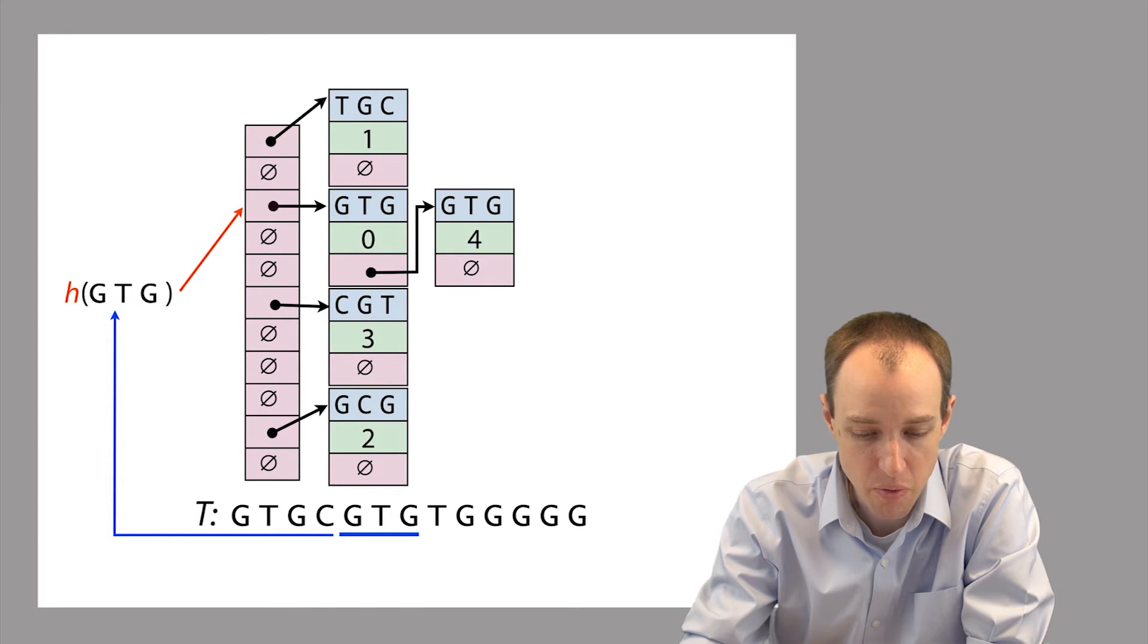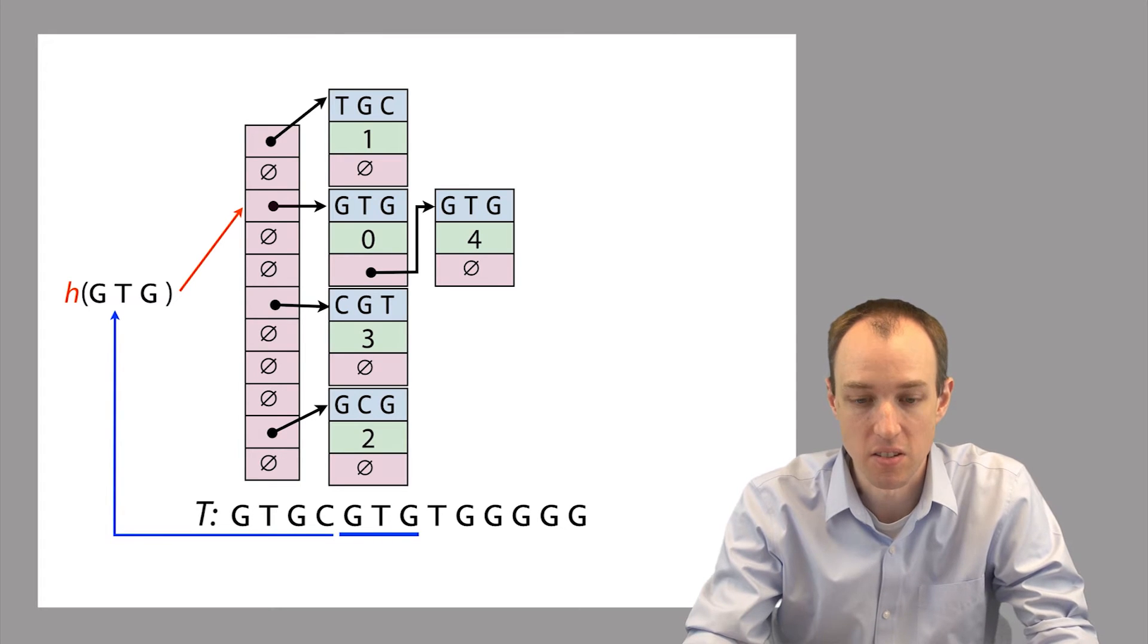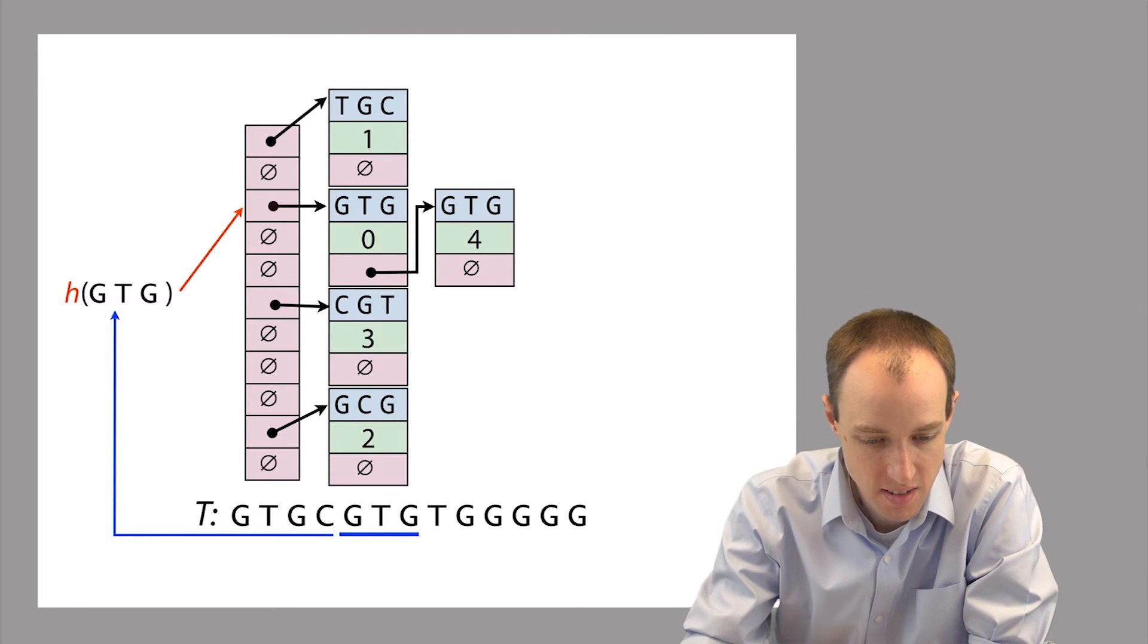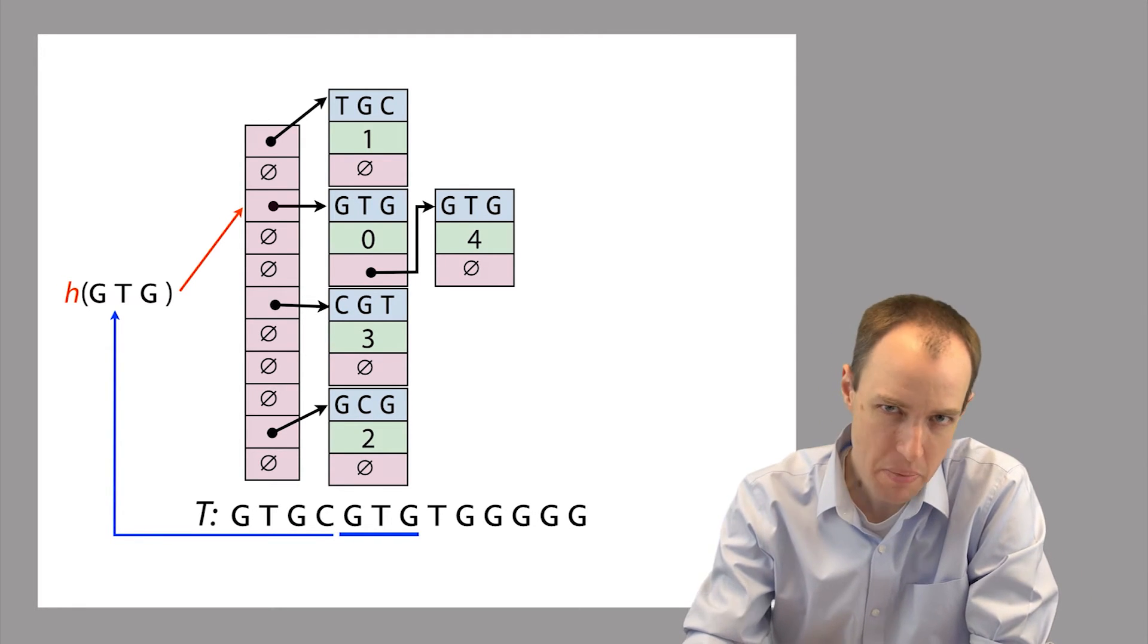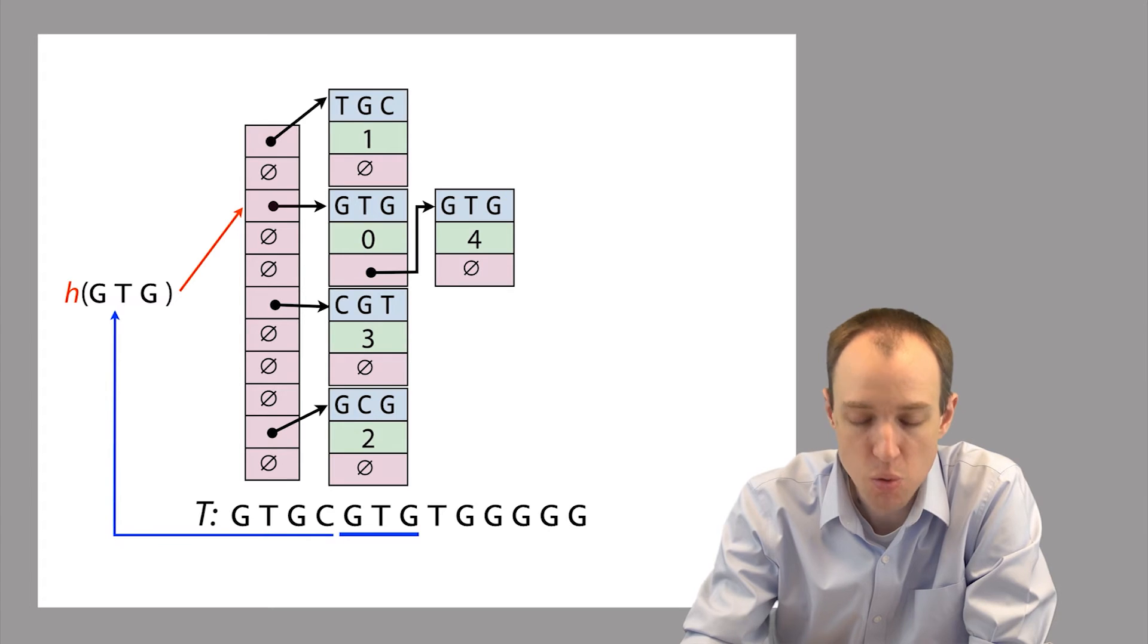And then now for the fifth 3mer, this is one that we've seen before. We've seen GTG before. So the hash function assigns it to the same bucket as before. And since there's already an entry in that bucket, we have to add it onto the end of the list that's already present in that bucket. So we could have pre-pended it to the beginning of the list too. It's not all that important which we do.